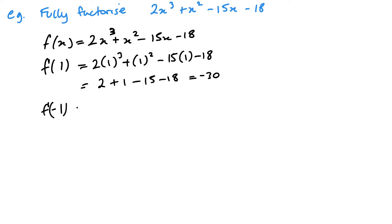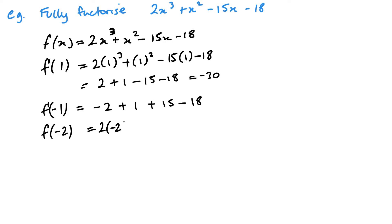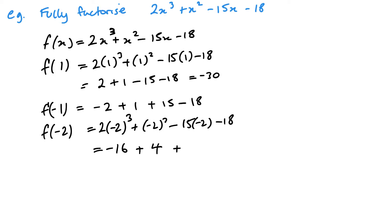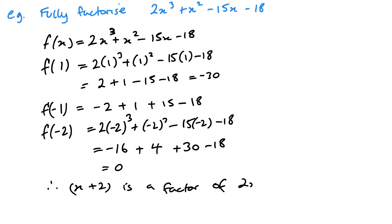Let's look at f(minus 1). That's going to give me minus 2 plus 1, plus 15 minus 18. Then let's try minus 2: we have 2 lots of minus 2 cubed, plus minus 2 squared, minus 15 times minus 2, minus 18. So minus 2 cubed is minus 8, giving minus 16 plus 4 plus 30 minus 18, and that equals 0. Therefore, x plus 2 is a factor of 2x³ plus x² minus 15x minus 18.